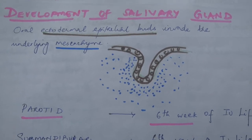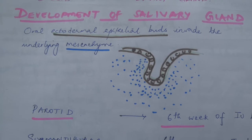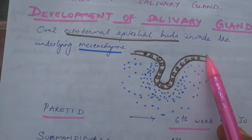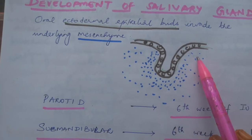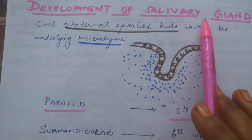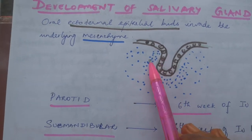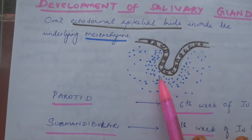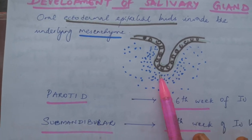The salivary gland develops by invasion of oral ectodermal epithelial bud invading into the mesenchyme. This is the process by which the salivary glands are developed. Later, the acini cells will be multilobulated and the salivary gland will be matured.